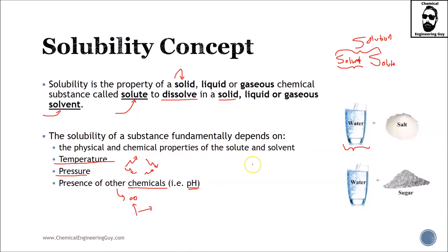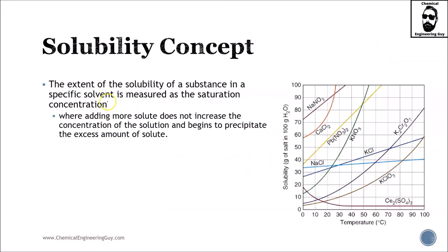The extent of the solubility of a substance in a specific solvent is measured as the saturation concentration, where adding more solute does not necessarily increase the concentration of the solution and begins to precipitate due to the excess amount of solid.